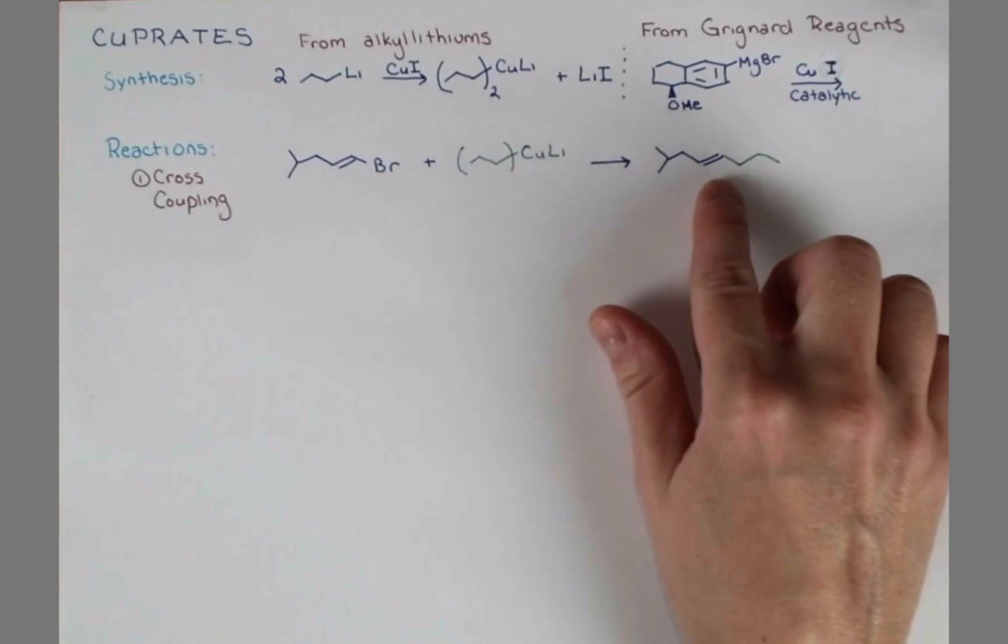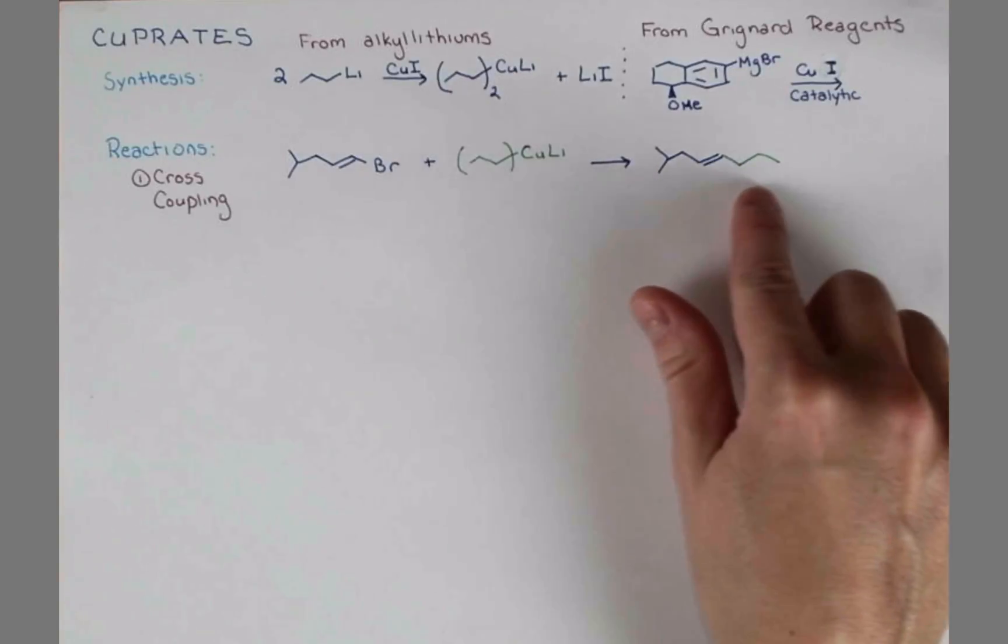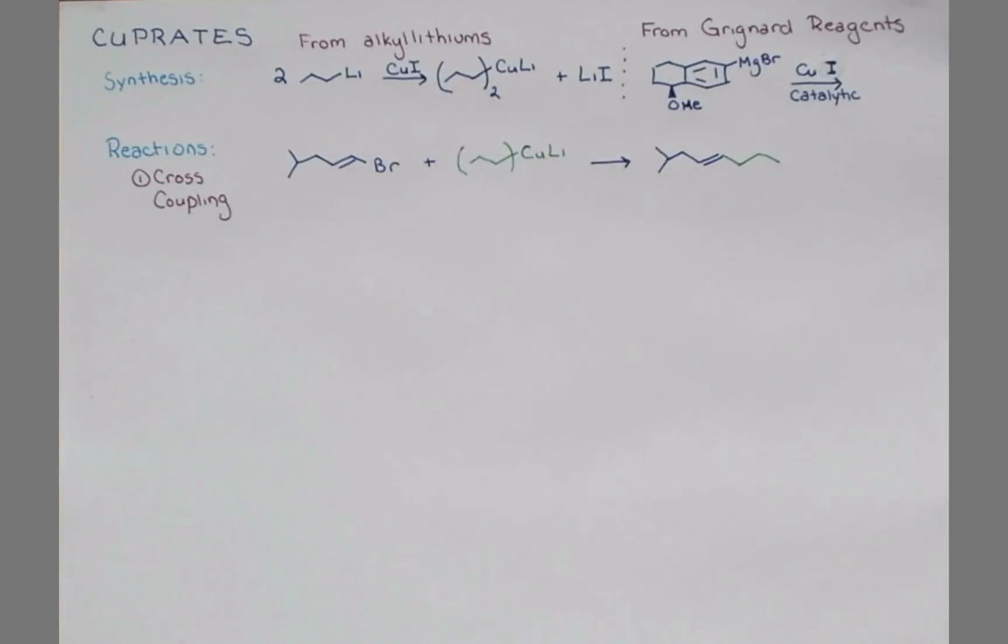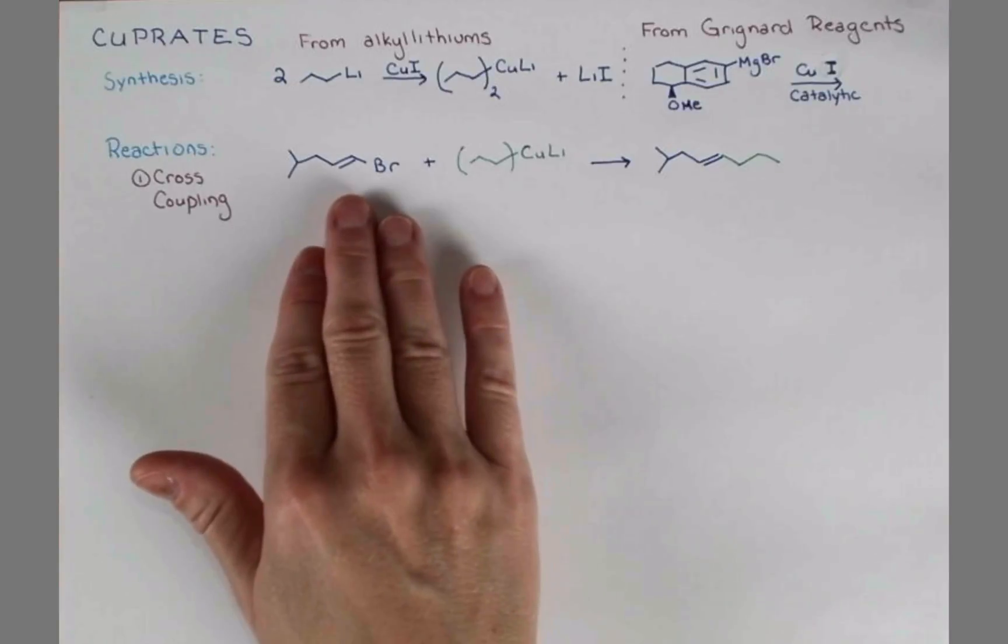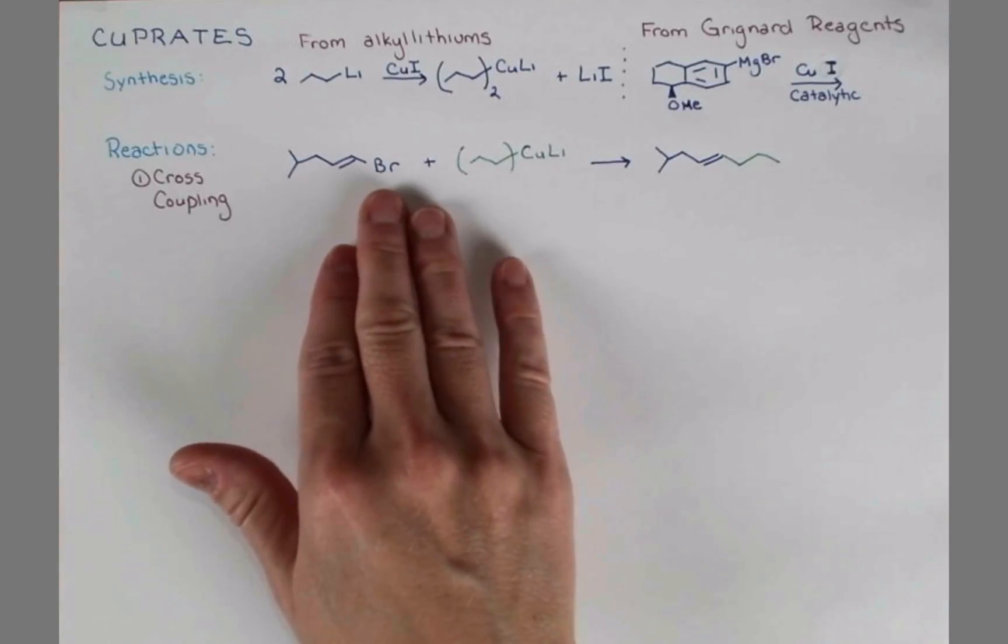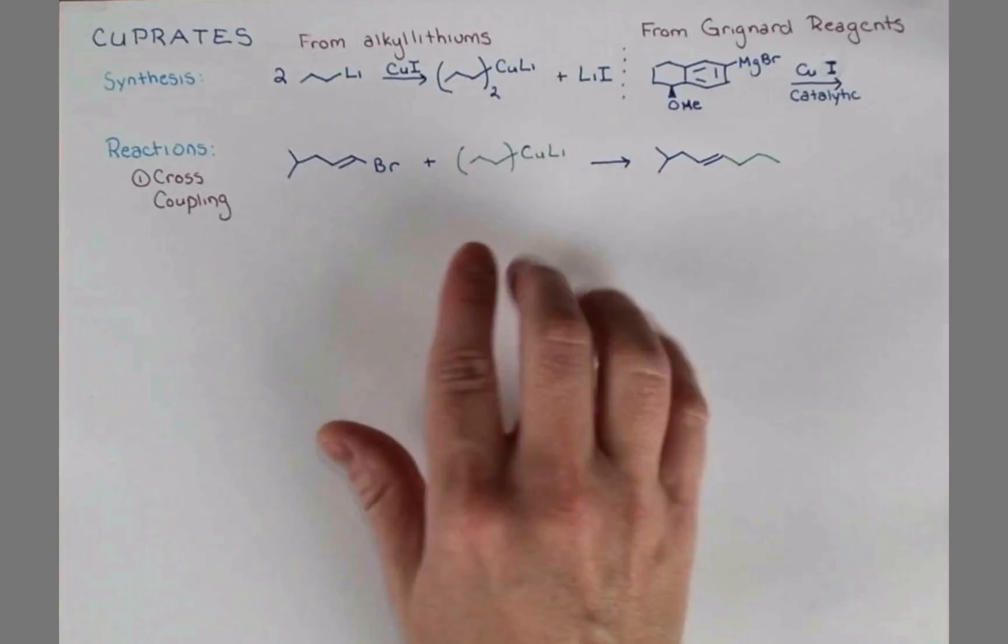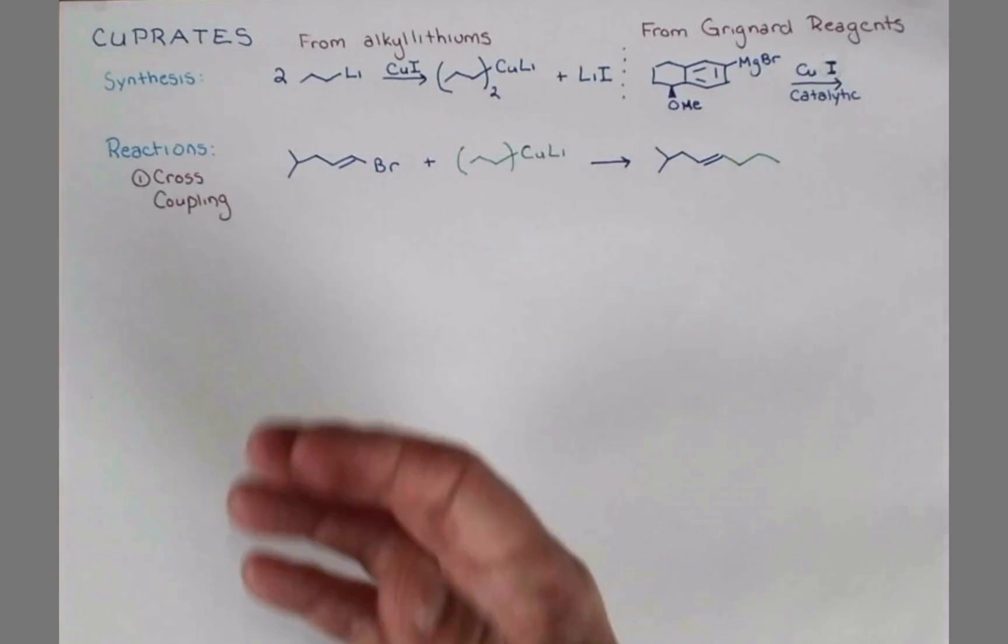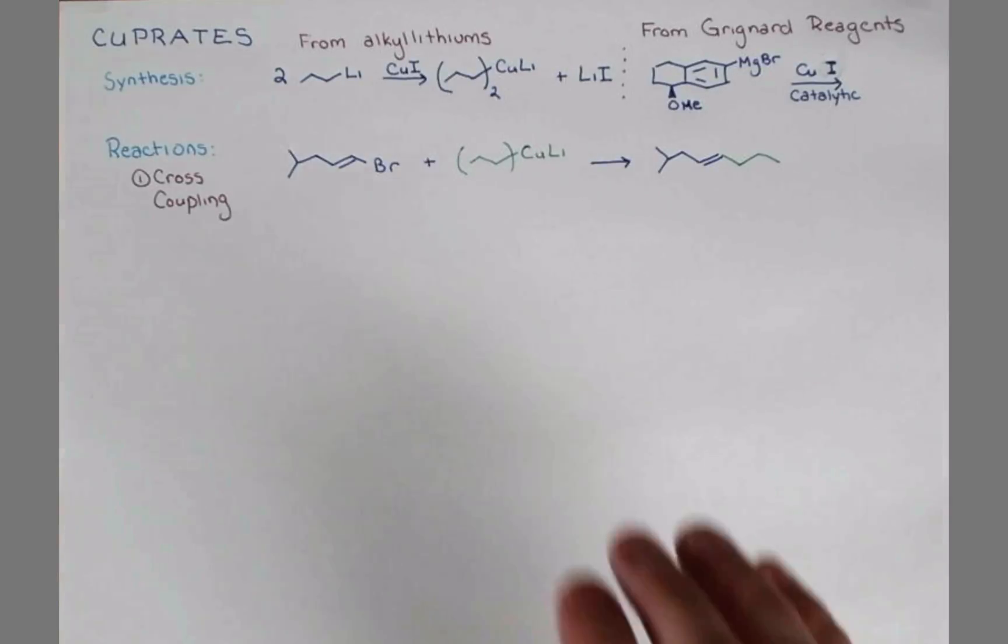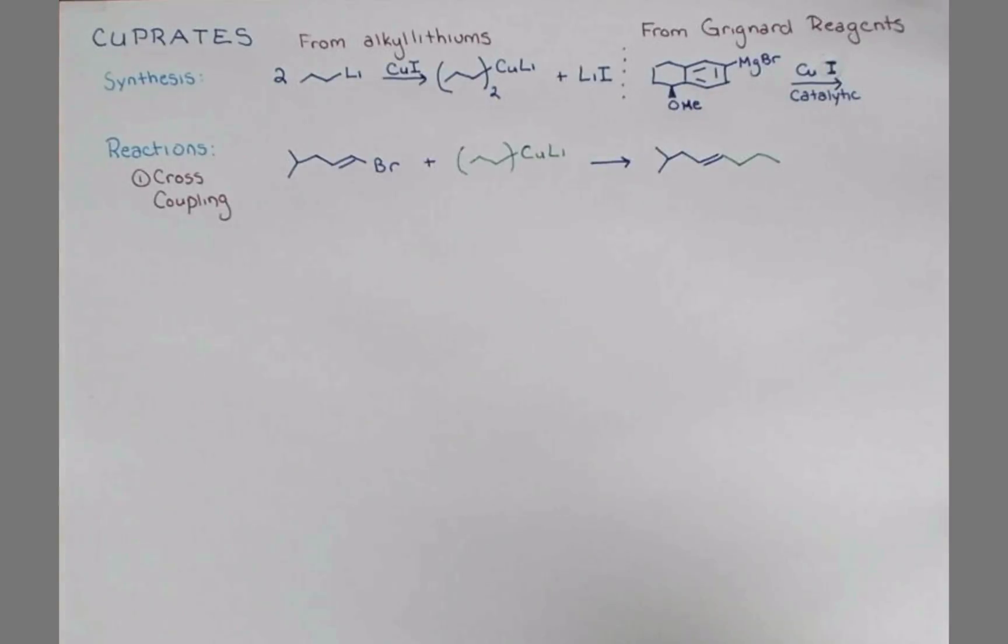This reaction retains the geometry at the alkene, and allows us to form a carbon-carbon bond. Now, this doesn't have to contain an alkene. We can use a lot of alkyl halides in this cross-coupling reaction. And it's important to note that if you treat an alkyl halide with a Grignard reagent, you're going to have elimination reactions happening, not this cool reaction where the pieces come together. So that's one way that cuprates are unique from Grignard reagents.